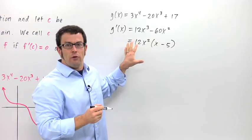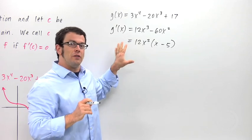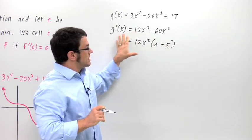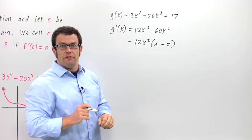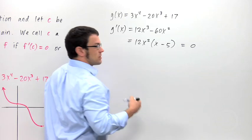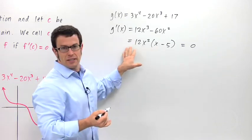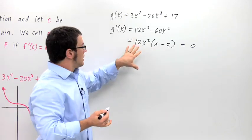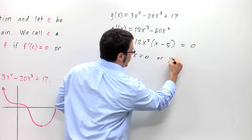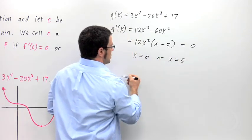Now remember, I want to look for critical points, and critical points are where the derivative equals 0 or where it's undefined. This derivative is never undefined, so I need to find where it's 0. I set it equal to 0 and solve for x. This is really easy because it's already factored, and that's why I factored it. So that tells me that x = 0 or x = 5. These are the two critical points.